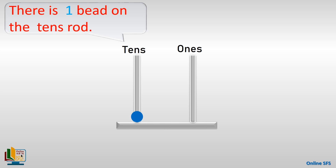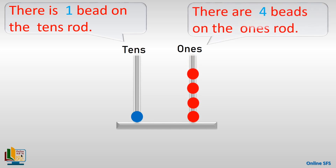There is one bead on the tens rod. Now let's see how many beads there are on the ones rod. Let's count: one, two, three, four. There are four beads on the ones rod. For the tens column, we have only one ten.